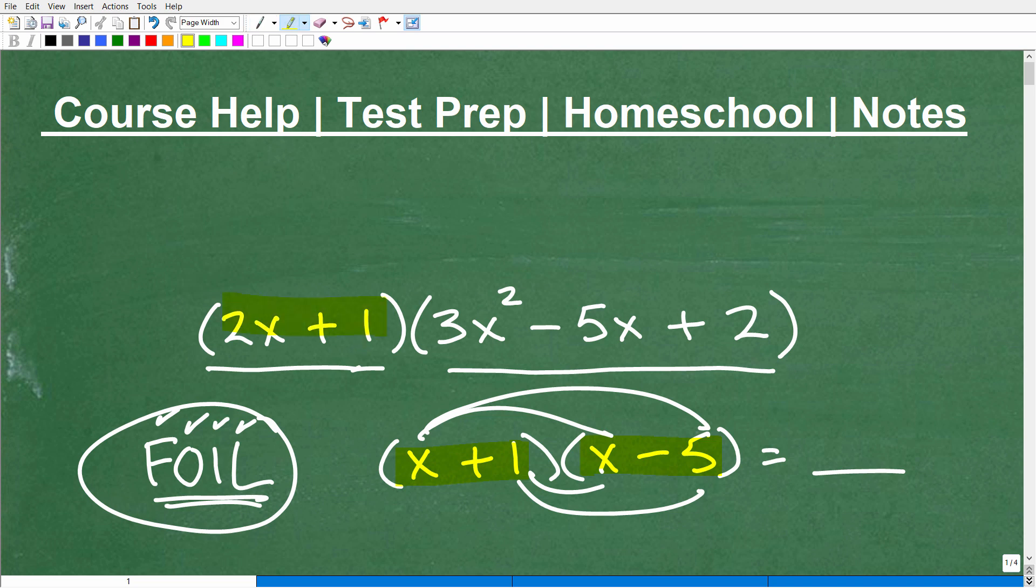But what happens if I have a binomial and we multiply it by something larger, like a trinomial? Well, then we have to do this problem in a different way. But actually, it's kind of somewhat related to the FOIL technique. Matter of fact, the FOIL technique is kind of a reduced-down way of doing how I'm going to do this problem here in just one second. So again, if you think you could do this, go ahead and pause the video and whip up your solution, and we can compare our answers here in just one second.